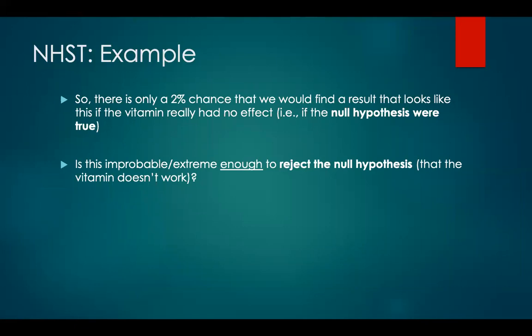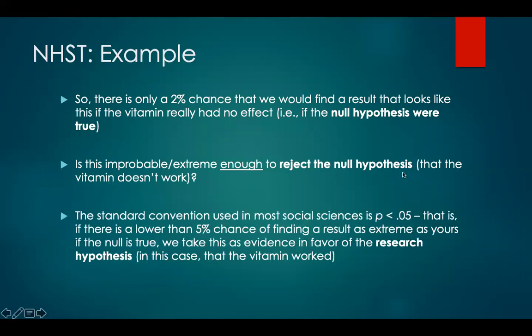Is this improbable or extreme enough to reject the null hypothesis — to reject the hypothesis that the vitamin doesn't work? The standard convention used in most social sciences is p less than 0.05. That is, if there is a lower than 5% chance of finding a result as extreme as yours if the null hypothesis is true, we take this as evidence in favor of the research hypothesis — in this case, that the vitamin worked.